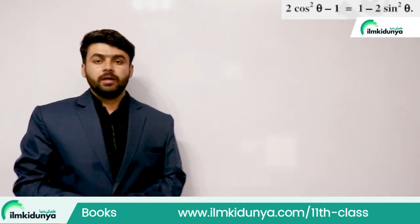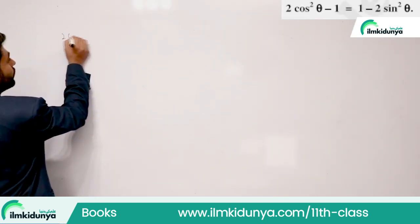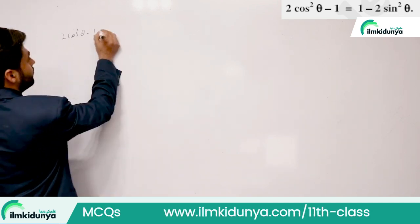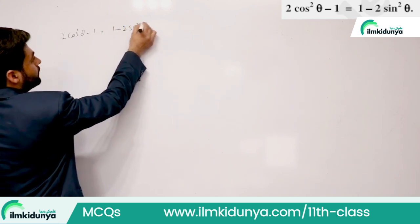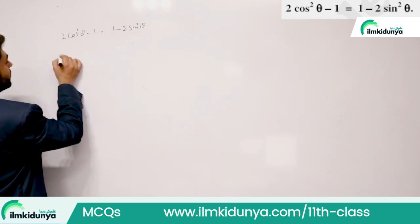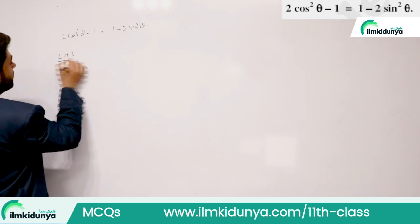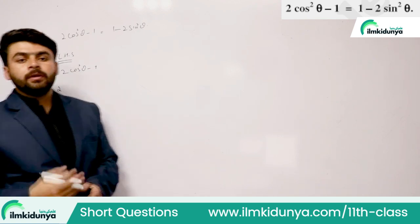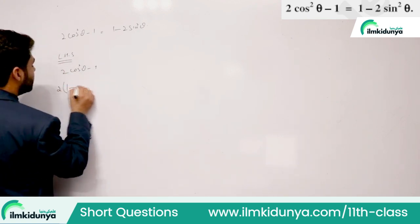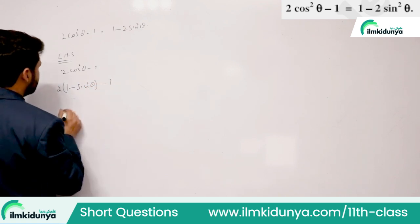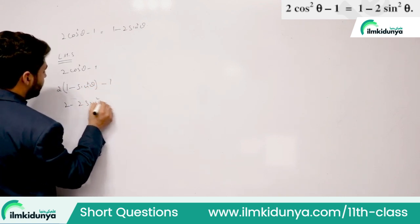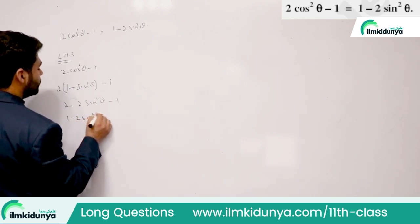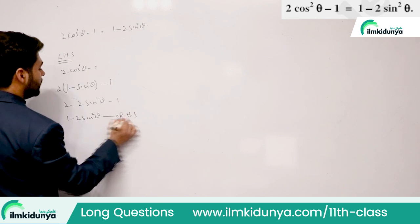Question 7: 2cos² θ − 1 = 1 − 2sin² θ. We try the left-hand side: 2cos² θ − 1. Since cos² θ = 1 − sin² θ, we substitute: 2(1 − sin² θ) − 1 = 2 − 2sin² θ − 1 = 1 − 2sin² θ, which is the right-hand side. Hence proved.